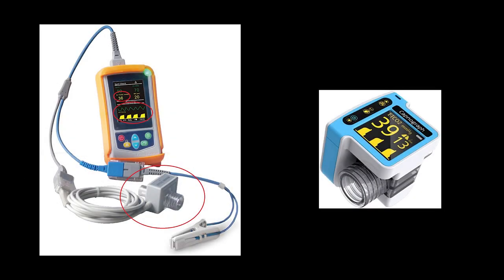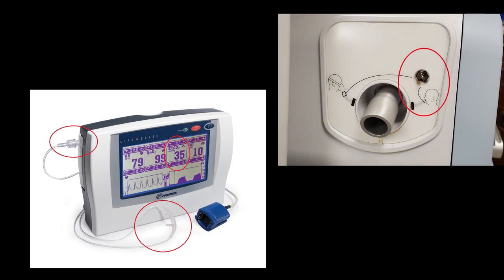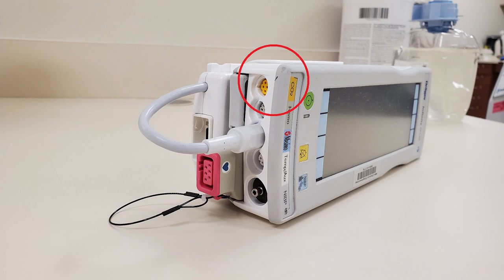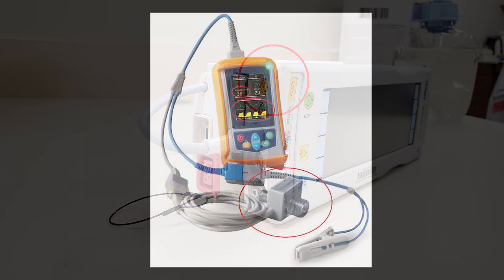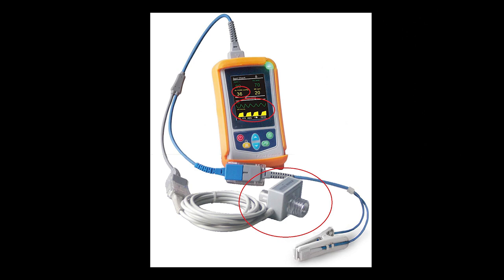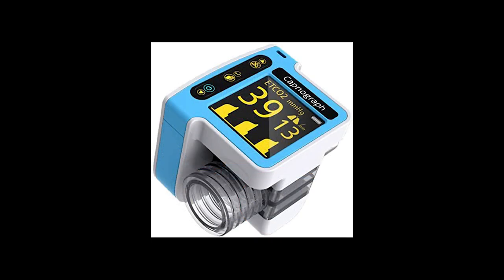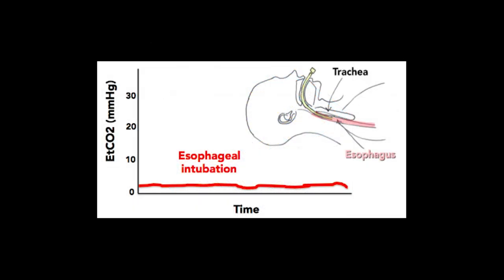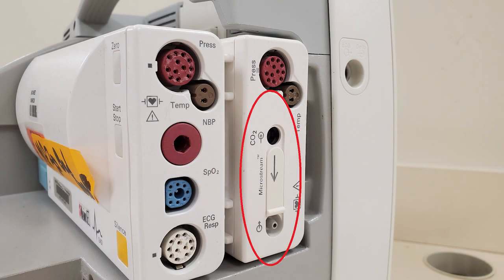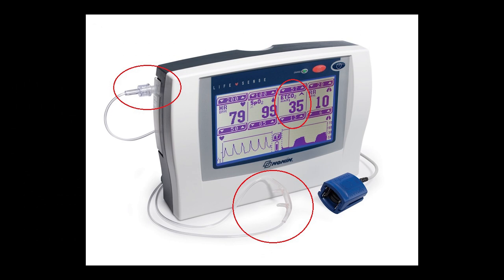There are two types of end-tidal sensors: mainstream sensors and sidestream sensors. Mainstream sensors take measurements directly at the main tube connected to the patient. There's no delay in the results, as the electrical components are located immediately at the source. This type of EtCO2 monitor is often found in areas where the patient is intubated, like operating rooms, ICUs, and the ER sometimes.